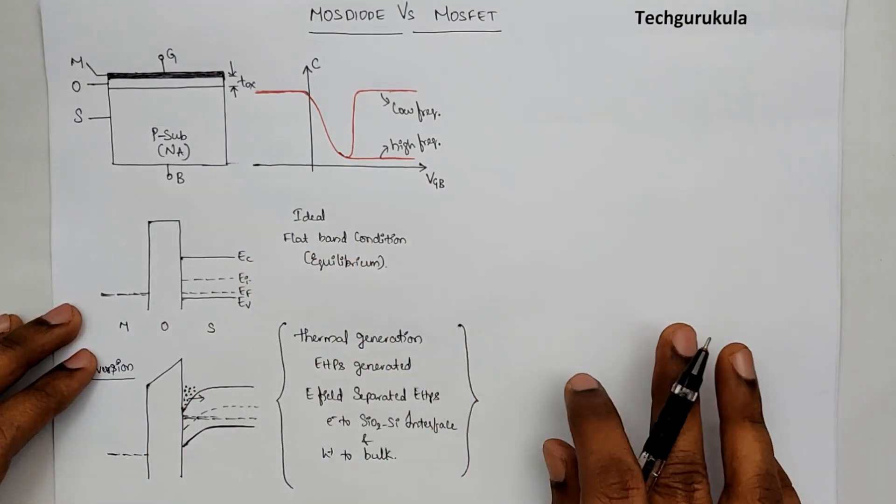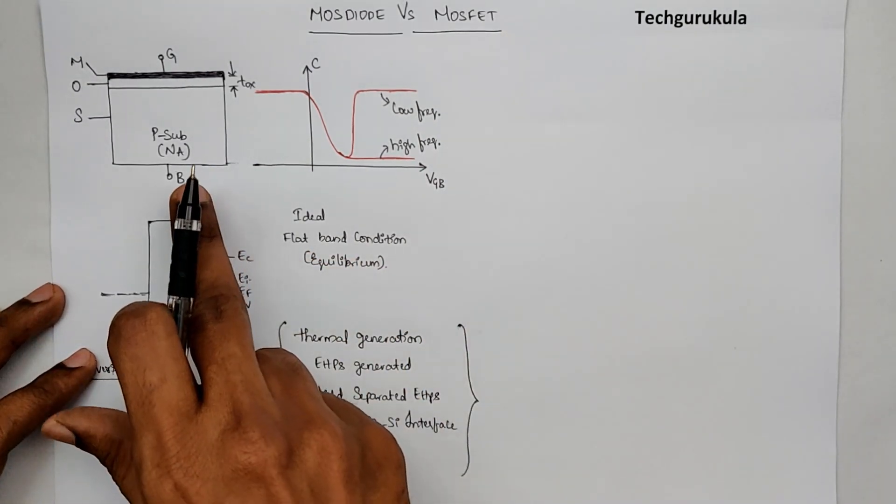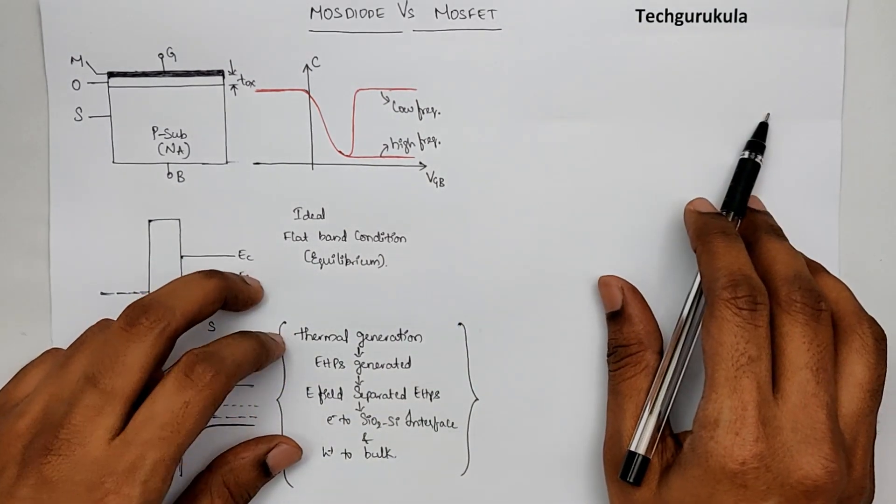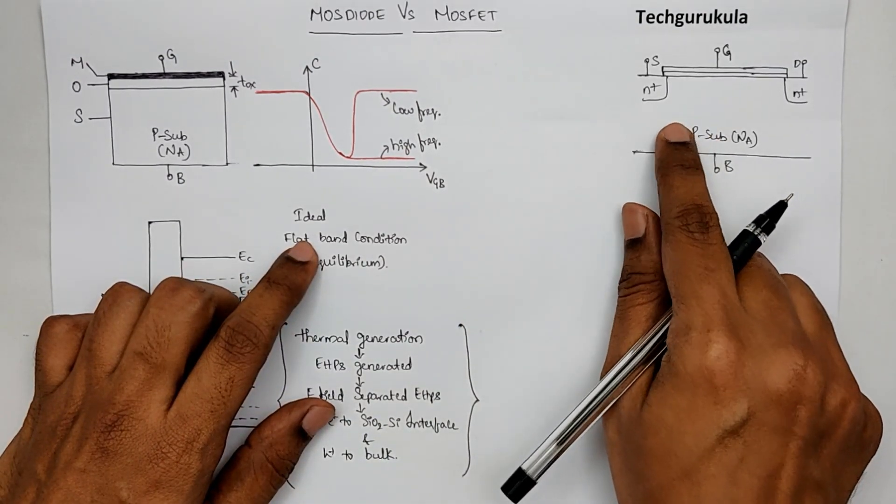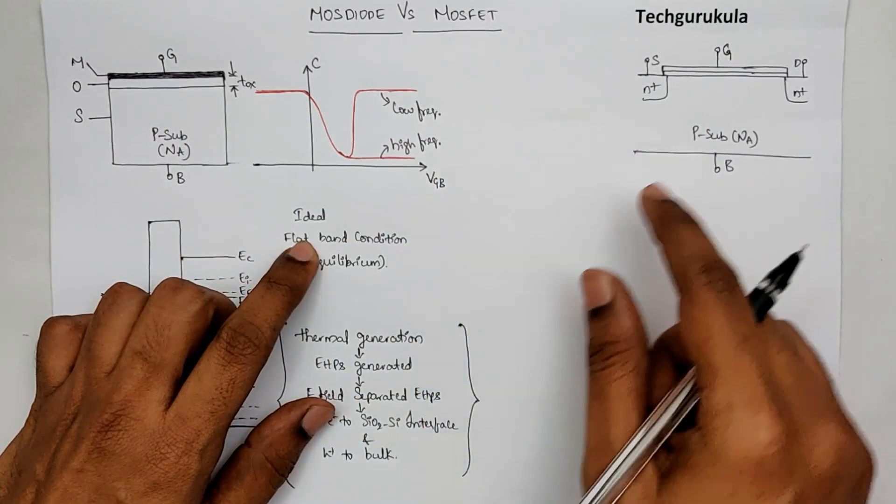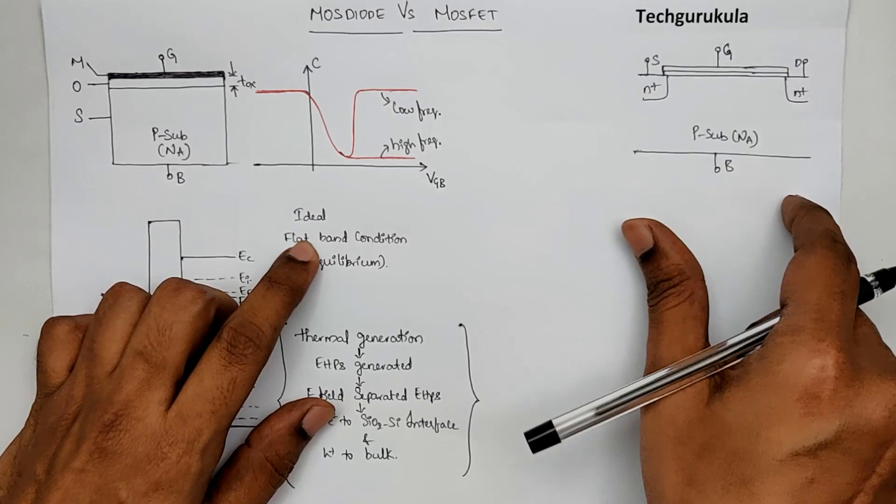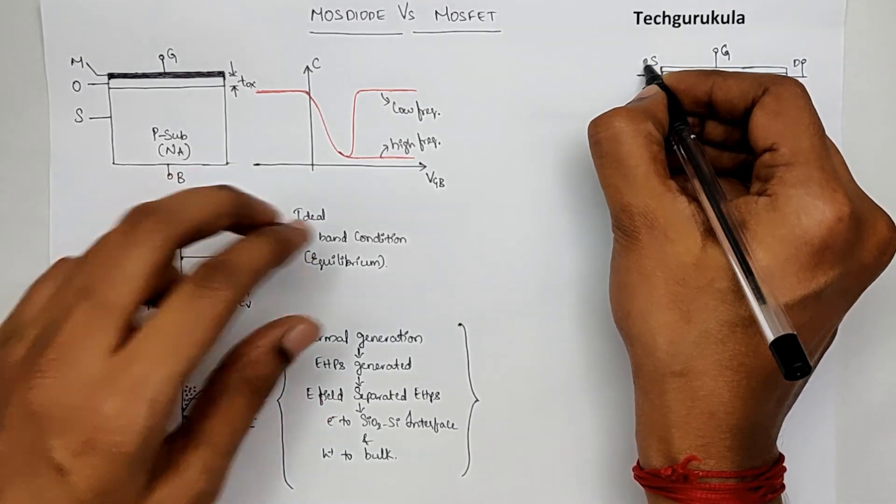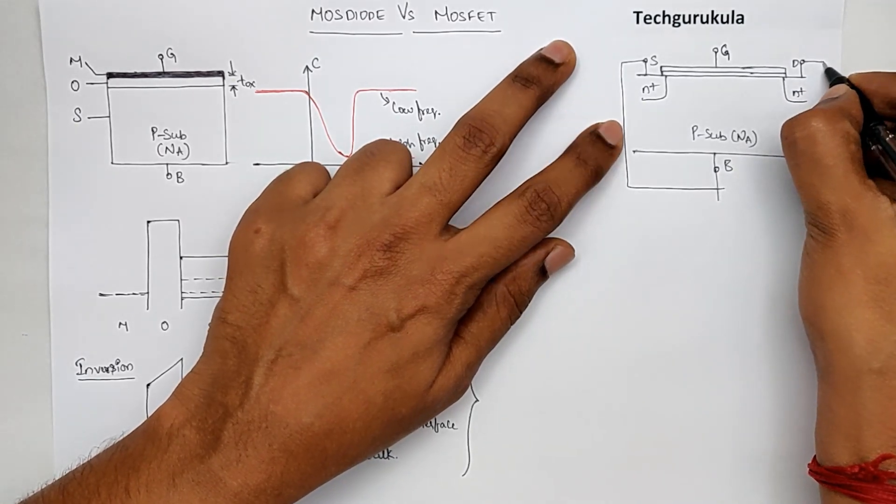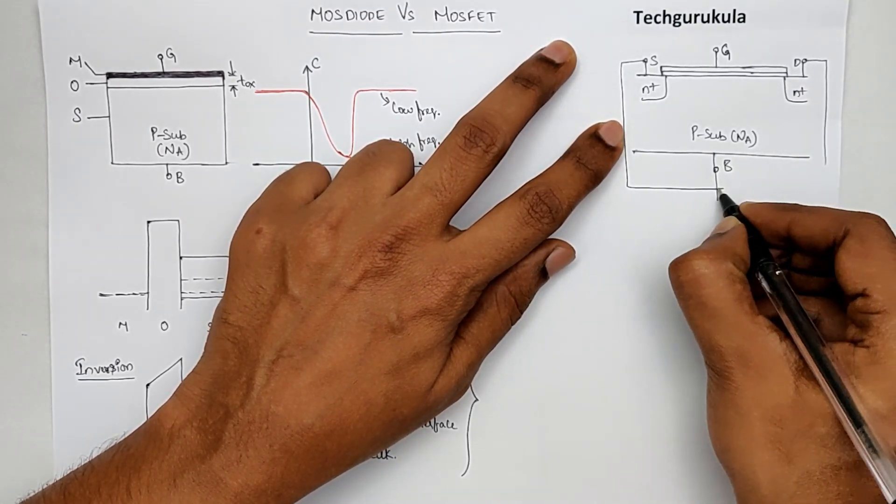Let's look at what happens in a MOSFET compared to this MOS diode. Let me take a MOSFET structure here. To understand MOSFET's behavior in comparison to MOS capacitor or MOS diode, I need to make this also a two-terminal structure. So I am shorting the source to the bulk and even the drain to the bulk, so that it becomes a two-terminal structure now.